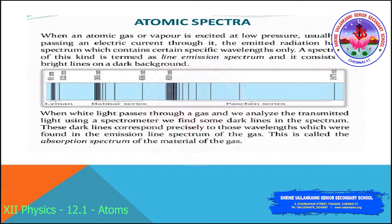These dark lines represent the precise wavelengths found in the emission line spectrum of the gas. When white light is passed through a gas and the transmitted light is analyzed using a spectrometer, we find some dark lines in the spectrum — this is the absorption spectrum of that particular gas.